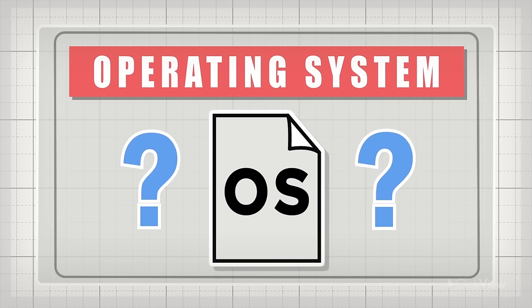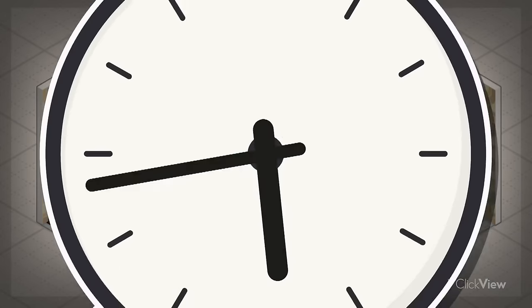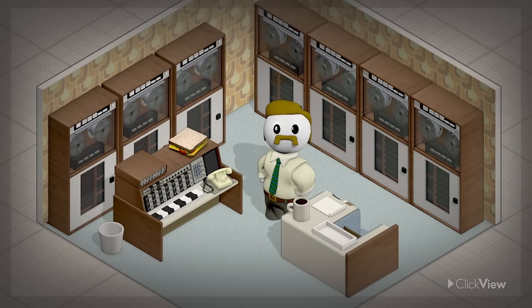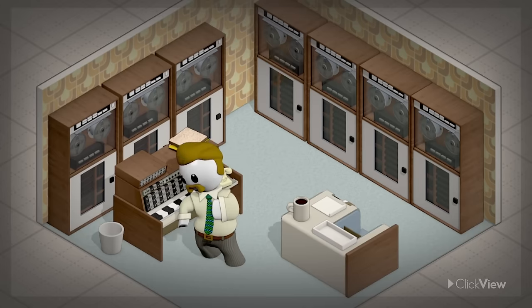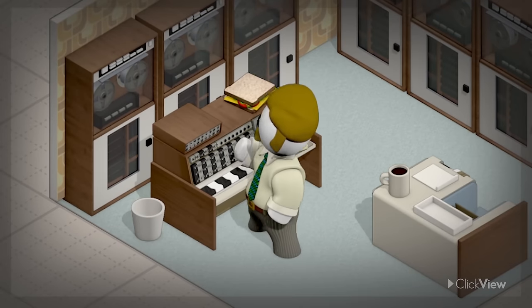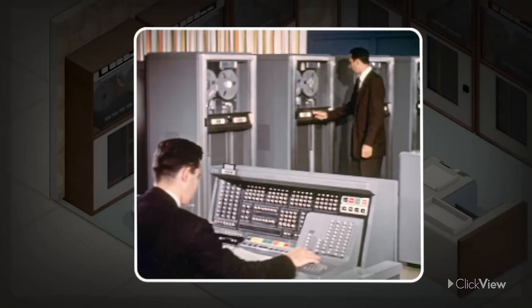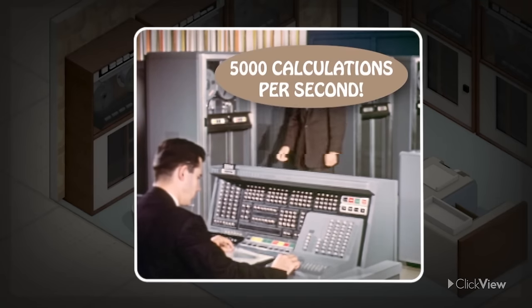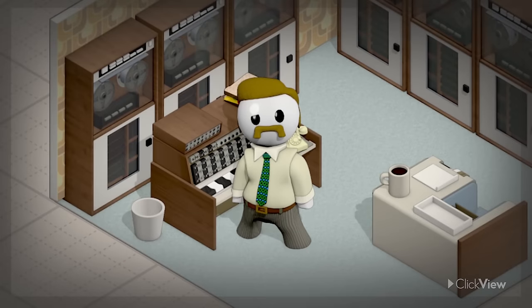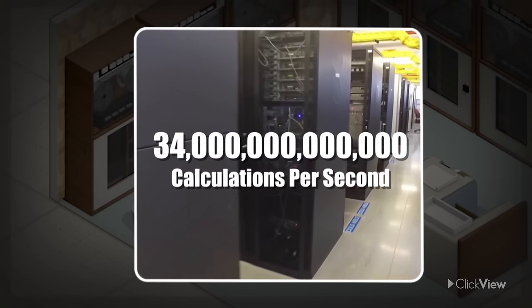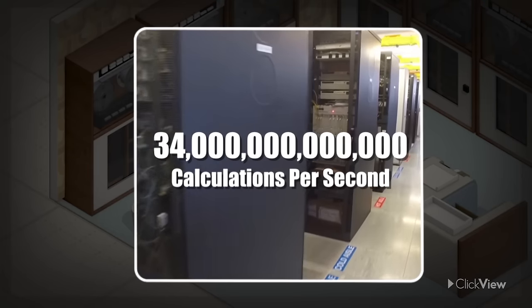To consider what the operating system is, let's go back in time to the invention of digital computers. They could handle around 5,000 complex calculations per second. Impressive for the time, but today's supercomputers perform nearly 34 trillion calculations per second.